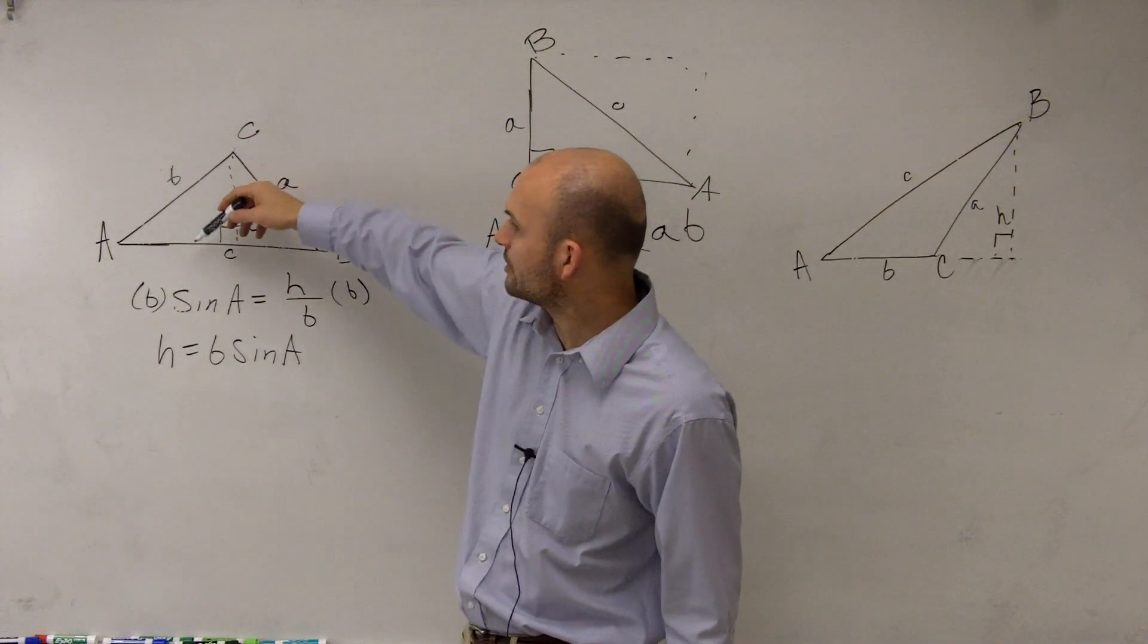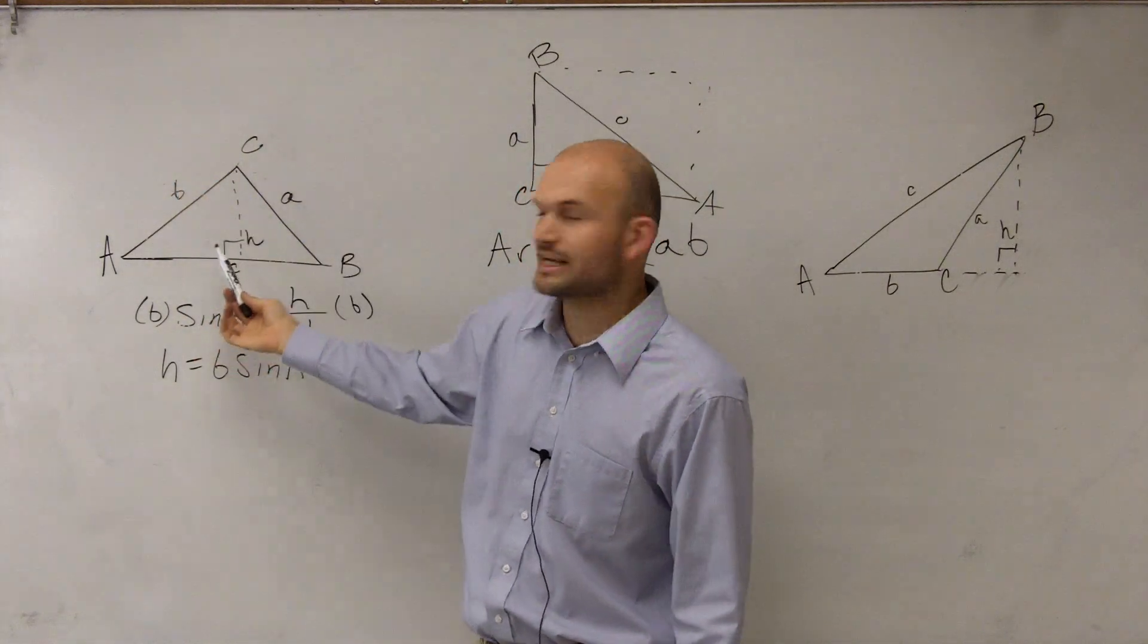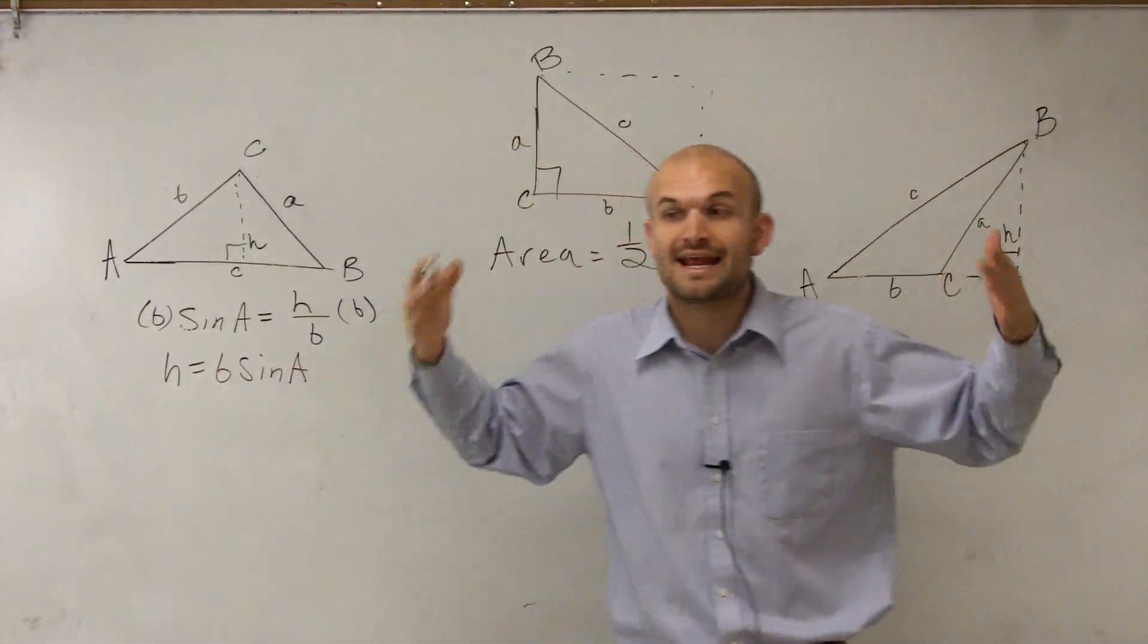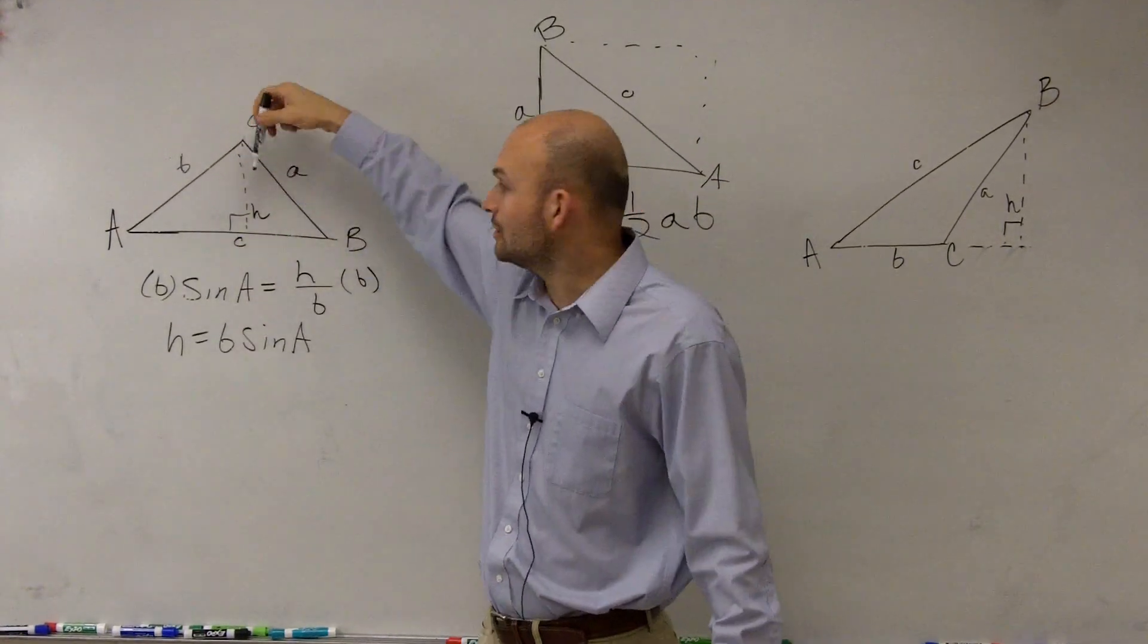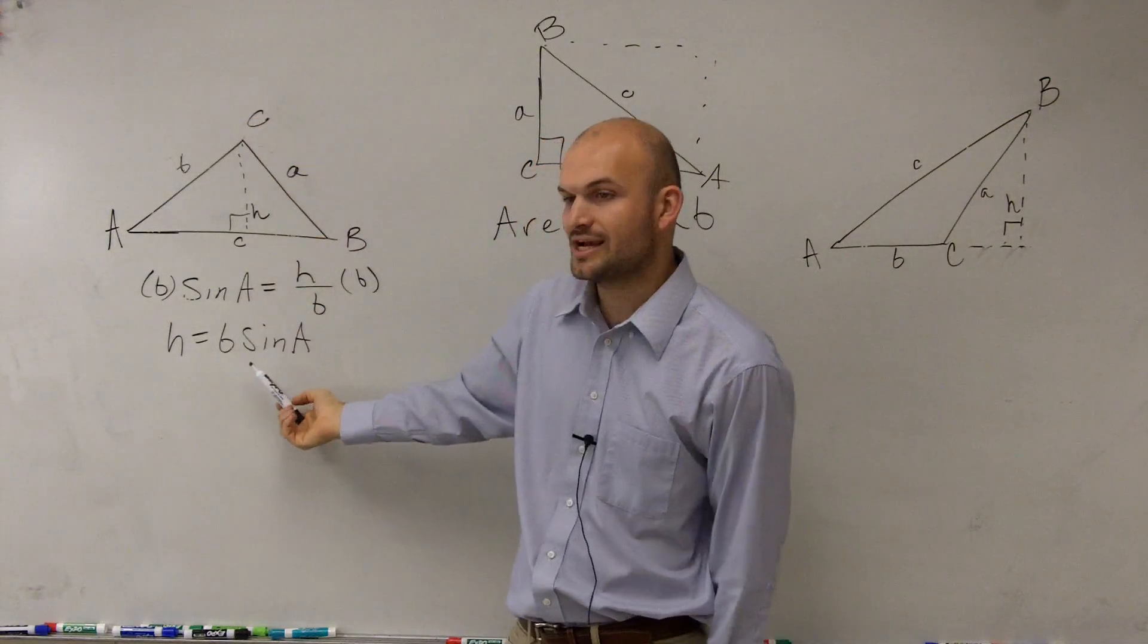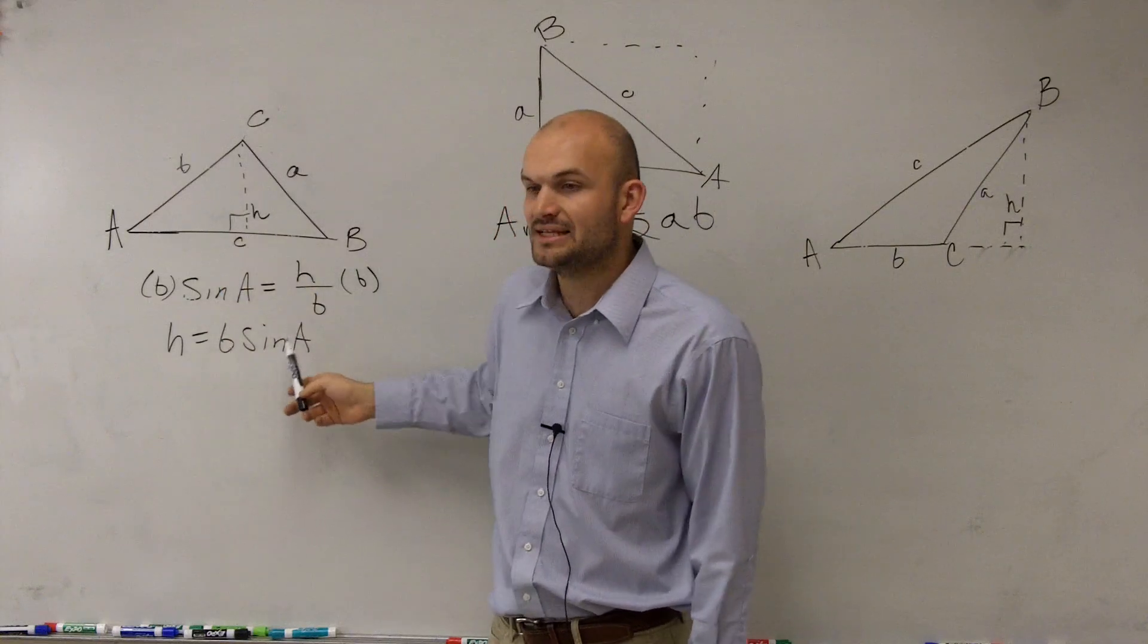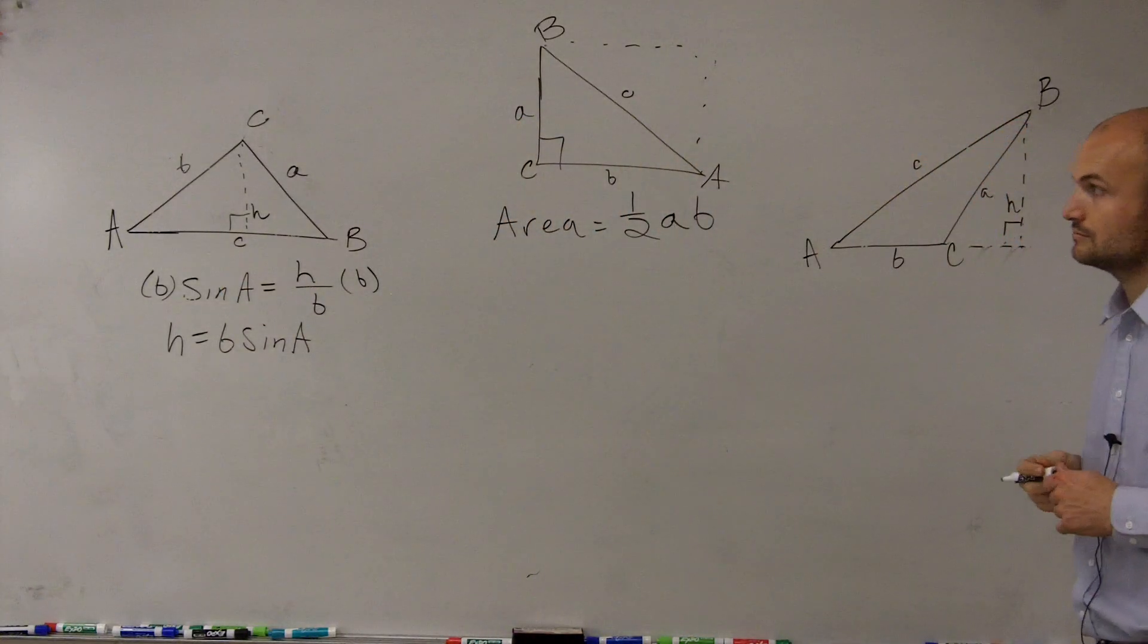Because remember, if I wrote this triangle, remember, sine is opposite over hypotenuse. So what I did is I created a right triangle, right? Because we can only use our trig function if we have a right triangle. So what I did is I created my own right triangle, so therefore I could say, oh, hypotenuse is, or sine is opposite over hypotenuse, and now by solving for H, I can say, oh, the height of this oblique triangle is B times sine of A.